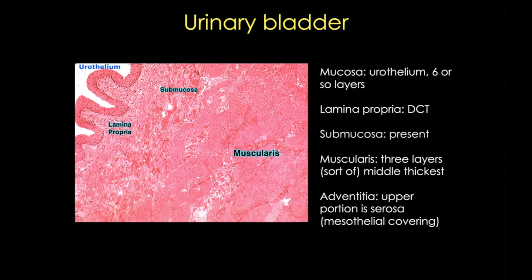The umbrella cells are very interesting — they contain disc-like vesicles that can be added to the surface, which is how the bladder actually expands to accommodate urine. When the bladder is full, we can't see these vesicles. Now that we've made it all the way to the bladder, we've traveled from the glomerulus and renal corpuscle through the tubule system: recovering water, reabsorbing important substances, and secreting harmful or toxic substances into the filtrate to eventually form urine.